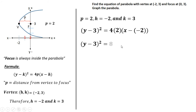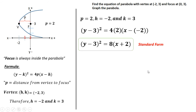Four times two is eight, and x minus negative two becomes x plus two. So (y - 3)² = 8(x + 2) is our standard form. To get the general form, we need to expand the whole equation.